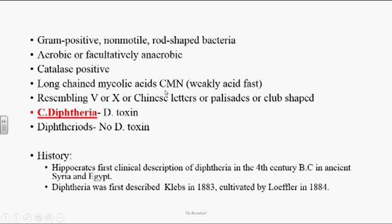Mycobacterium is an acid-fast organism, whereas Corynebacterium and Nocardia are weakly acid-fast. Nocardia organisms are weakly acid-fast and are filamentous rod-shaped organisms. After binary fission, Corynebacterium diphtheriae are arranged as V, X, Chinese letter, palisades, or club-shaped appearance in gram stain or culture medium. Organisms which produce diphtheria are referred to as Corynebacterium diphtheriae, while those which do not are referred to as diphtheroids.